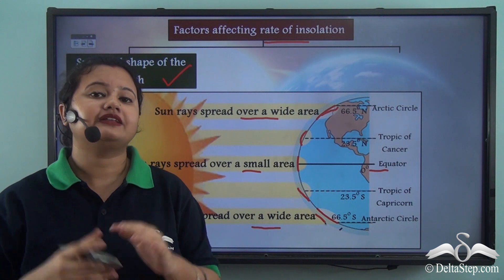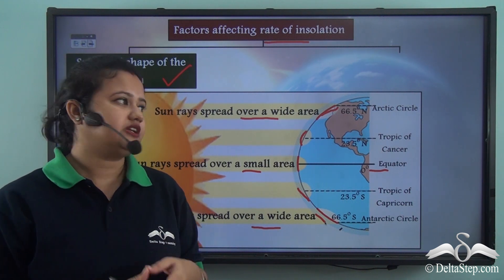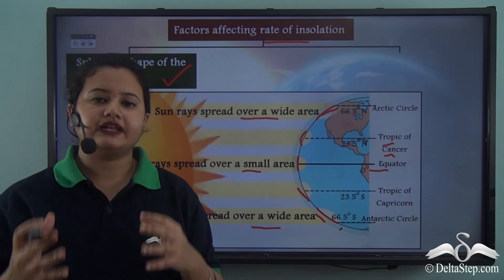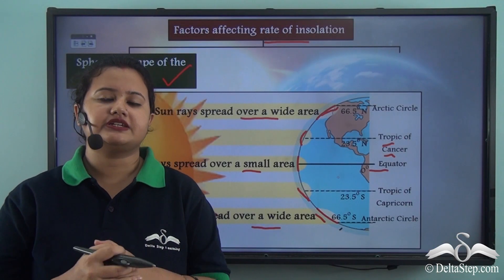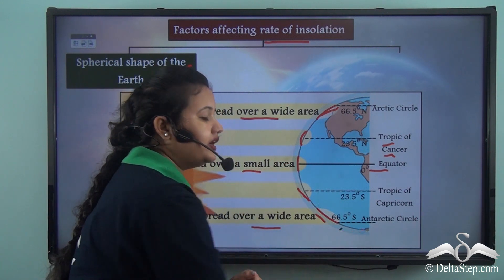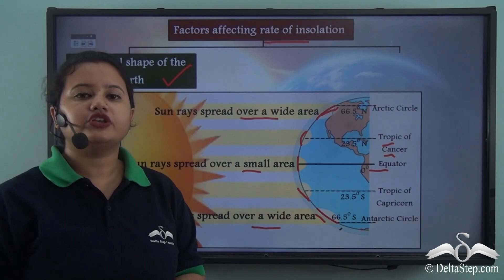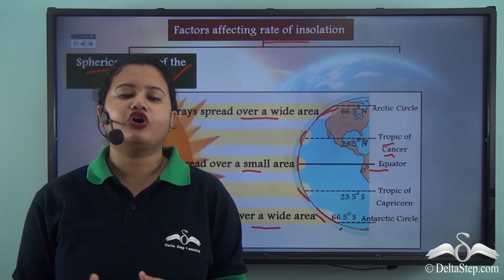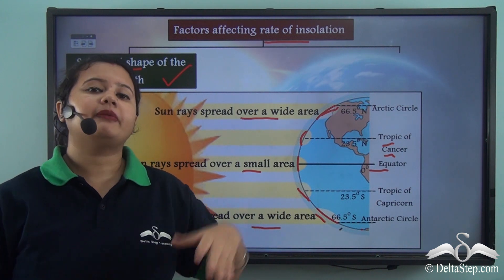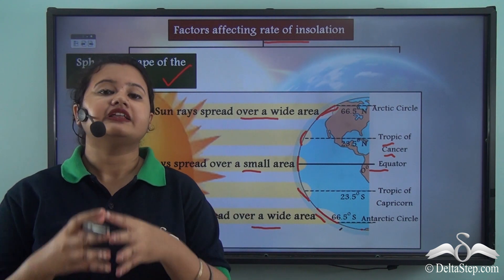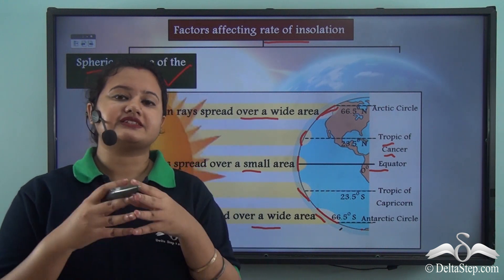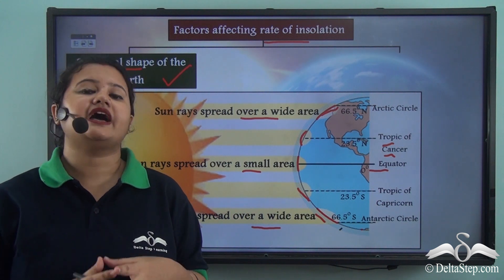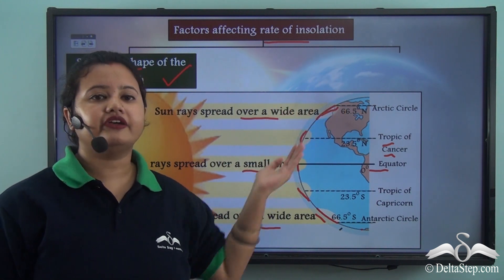So now we can relate why Thar Desert, which is located near the Tropic of Cancer, has higher temperature, while Antarctica, which is located at the southern pole, has lower temperature. Due to the spherical shape of the earth, the rate of insolation received by different places in the world varies. The rate of insolation is highest at the equator, while it decreases as we move towards the higher latitudes.